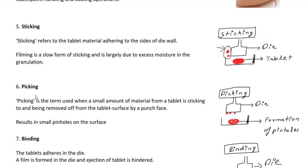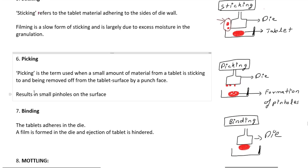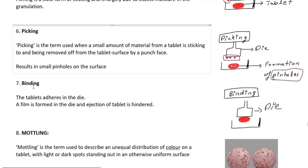Next is picking. Picking is when tablet surface material is removed and adheres to the die.